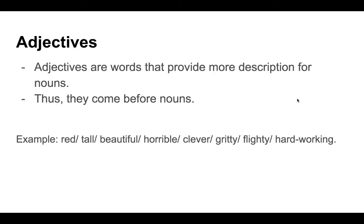Adjectives are our third category. Adjectives are words that provide more description and are usually used to describe nouns — because they describe nouns, they come before nouns. Examples include: red, tall, beautiful, horrible, clever, gritty, flighty, or hardworking. Note that 'hardworking' is a hyphenated adjective. We'll talk more about these types of adjectives and have a big list to help with descriptive writing. Adjectives are descriptive words — they modify nouns.